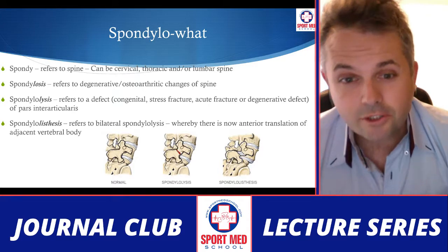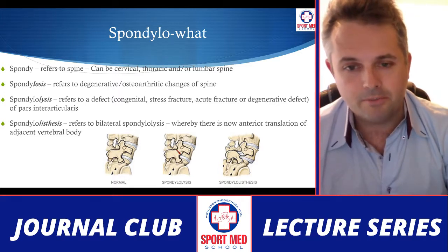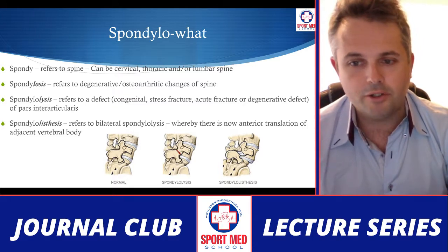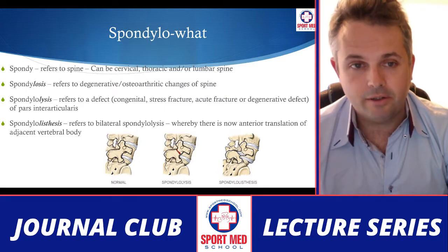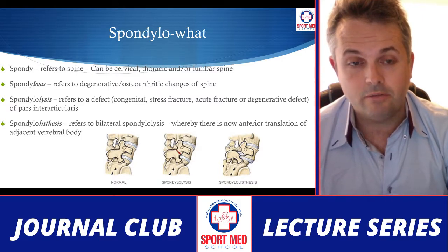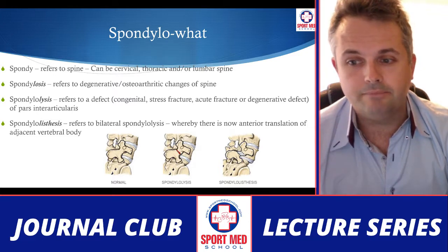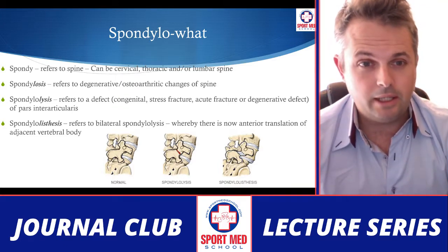There are a few terms using the root 'spondy', referring to the spine — which can mean the cervical, thoracic, or lumbar spine. Spondylosis is a general term referring to any kind of degenerative or osteoarthritic changes to the spine. Spondylolysis refers to a defect of the pars interarticularis between the above and below facet joint. It can be congenital, related to a stress fracture from hyperextension or repetitive hyperextension — typically occurring in gymnastics or figure skating — due to an acute fracture, or as a degenerative effect over time in the absence of injury.